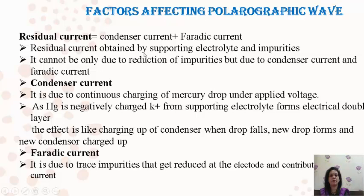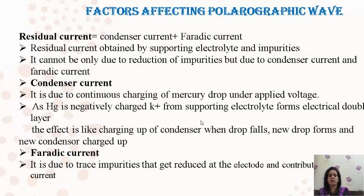Factors affecting the measurement of the polarographic wave: the residual current is a combination of condenser current and faradaic current. Residual current is obtained by the addition of supporting electrolyte or impurities which get reduced and give some current before the main study. The condenser current is due to continuous charging of the mercury drop under applied voltage — as the mercury drop carries a negative charge, K+ ions from the supporting electrolyte form an electrical double layer. When each new drop forms and comes in contact with the solution, it requires some charging up of the condenser — that is the condenser current.